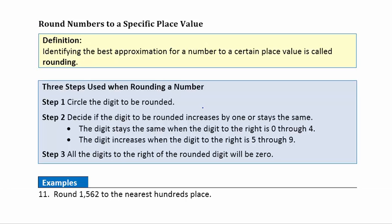Round numbers to a specific place value. Identifying the best approximation for a number to a certain place value is called rounding. We're finding an approximation to work with a number that's a little bit easier than the original. Here are the three steps we use when we round. Step one: circle the digit that's going to be rounded. Step two: decide if this digit to be rounded increases by one or stays the same. When we round a number down, that digit just stays the same — be careful with that. We look to the digit to the right of the rounded one: if it's between 0 and 4, keep it the same; if it's between 5 and 9, round the digit up. After rounding, every digit to the right goes to zero.